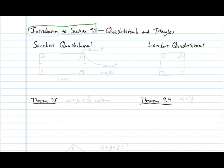Okay, we've finally reached our last section of the course. We're going to talk about section 9.4, in which we discuss quadrilaterals and triangles and hyperbolic geometry. Every theorem in this last section refers to hyperbolic geometry, although we will usually leave that out.